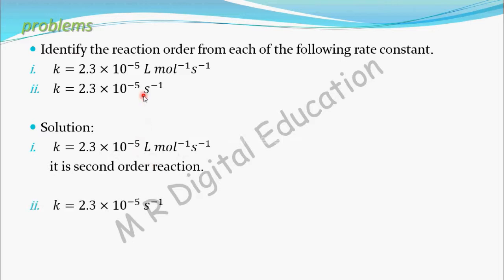Take this one. We clearly given unit of rate constant as per second. So for first order reaction, unit of rate constant is per second. You know that, so it is first order reaction.